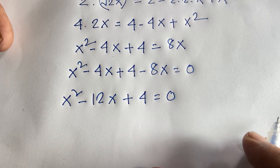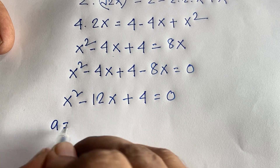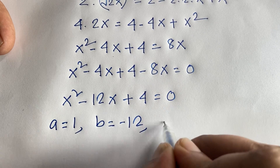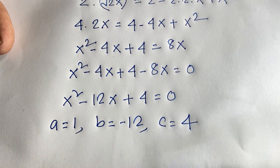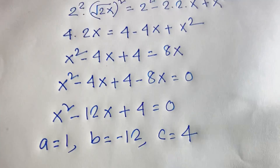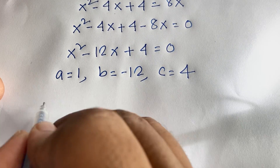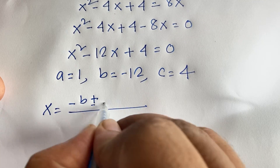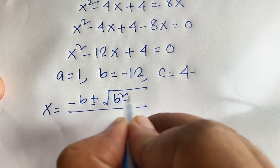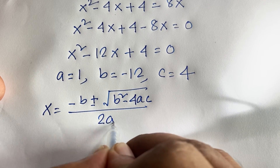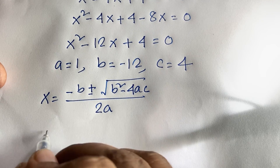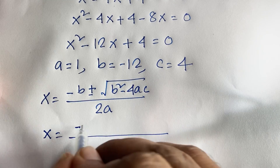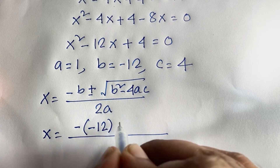We identify the coefficients: a equals 1, b equals minus 12, and c equals 4. Using the quadratic formula: x equals minus b plus or minus square root of b squared minus 4ac, all over 2a. So x equals minus (−12) plus or minus square root of...